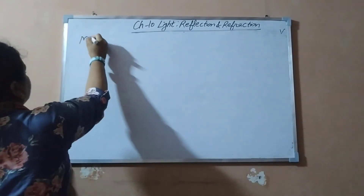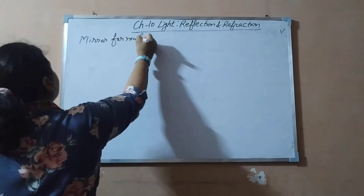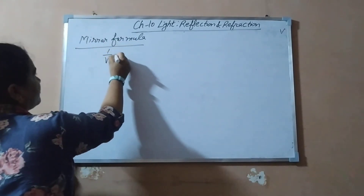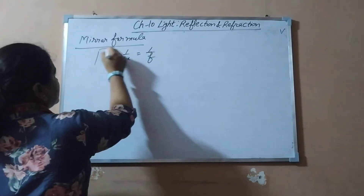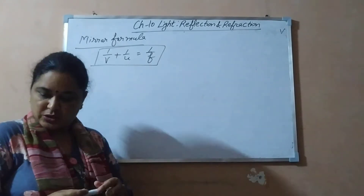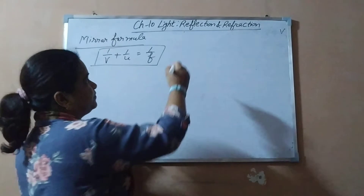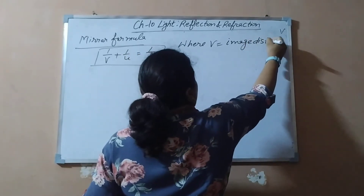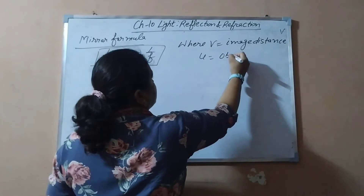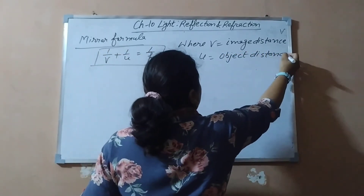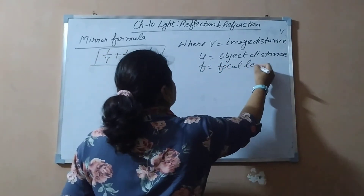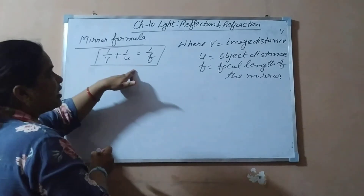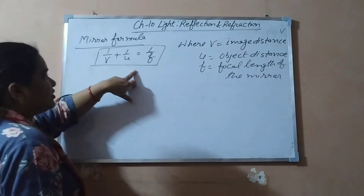Now let us come to the mirror formula. The mirror formula derivation is not given in Class 10 standard; you will study that in Class 12. Here we will just use the formula directly. The mirror formula is: 1/v + 1/u = 1/f. Where v is the image distance, u is the object distance, and f is the focal length of the mirror. This formula gives the relation between image distance, object distance, and focal length of the mirror.